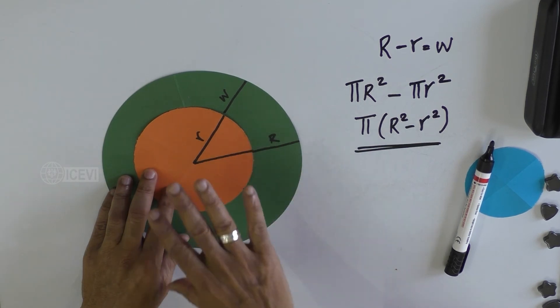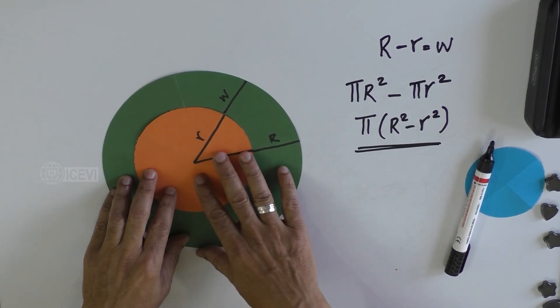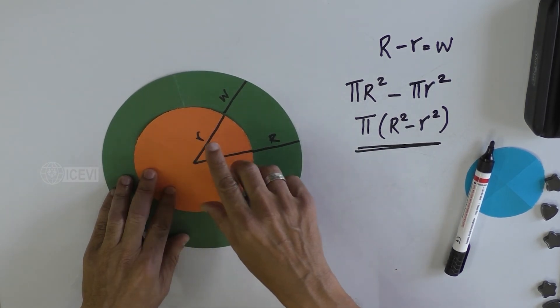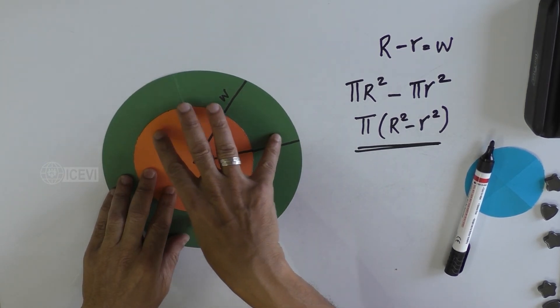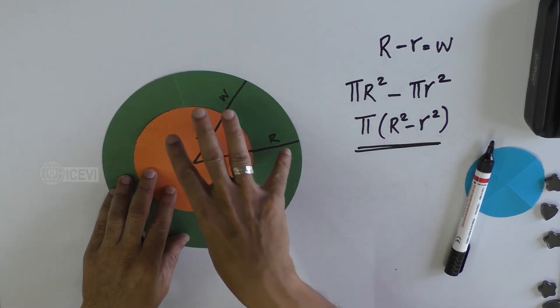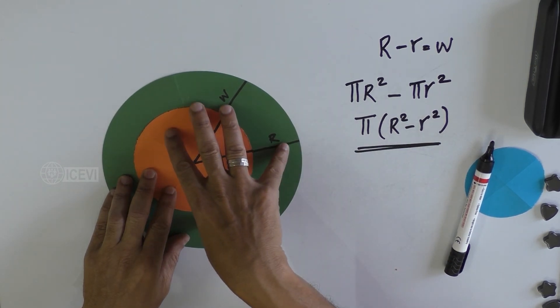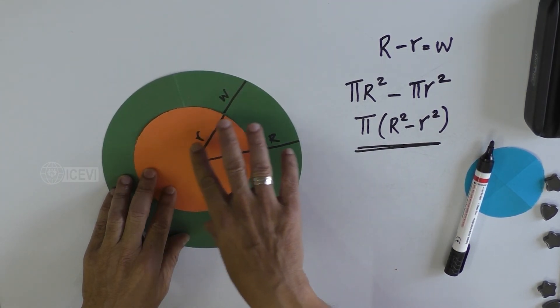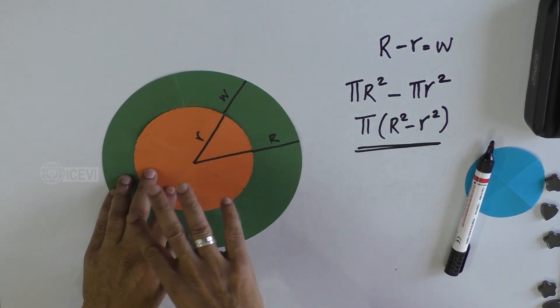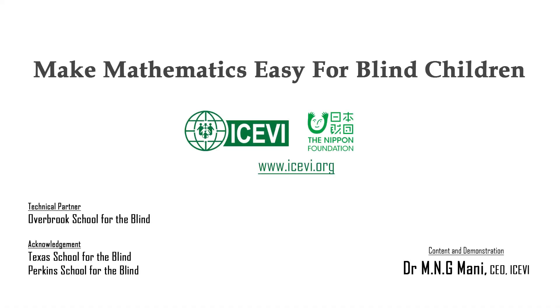The child will be able to understand the concept of concentric circles, the circular ring, and using the circular ring we have found out the area.